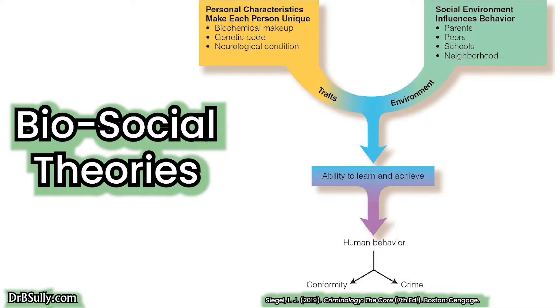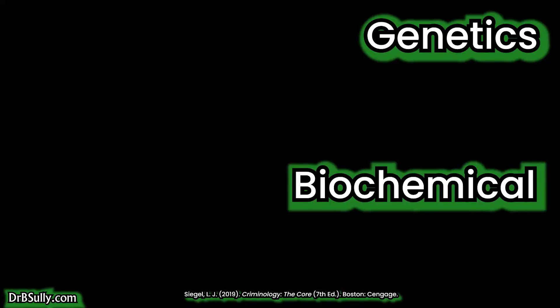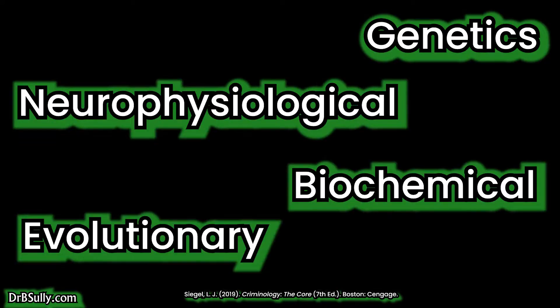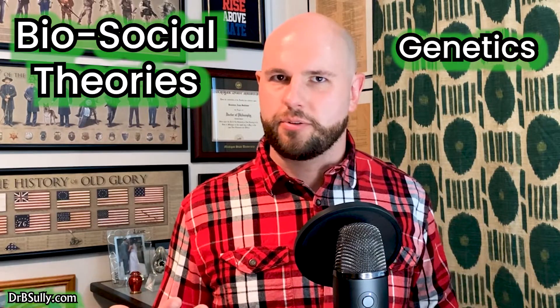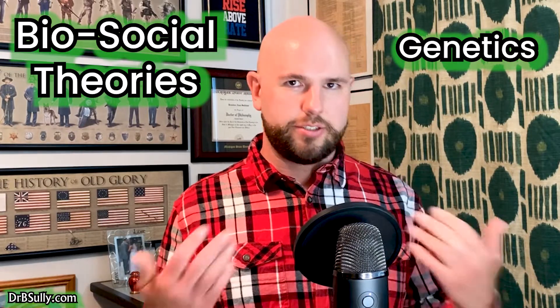So according to biosocial theories, in the debate over nature versus nurture, the answer is simple — both play an important role. The question then becomes identifying the extent of the relative influences of different biological and social or environmental factors. These biosocial theories generally can be divided into four major areas: Genetics, Biochemical, Neurophysiological, and Evolutionary. Let's start with genetics.